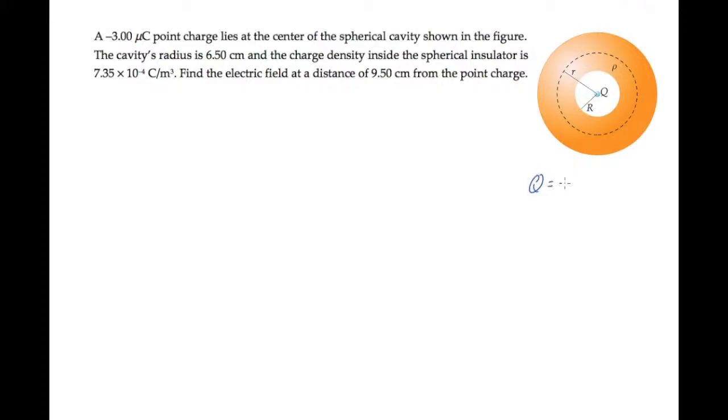The point charge Q in this problem has a value of minus 3 microcoulombs. It sits at the center of a spherical cavity with a radius of 6.5 centimeters. The orange insulator has a charge density of 7.35 times 10 to the 4th coulombs per cubic meter. We're asked to find the electric field a distance r equals 9.5 centimeters from the point charge.